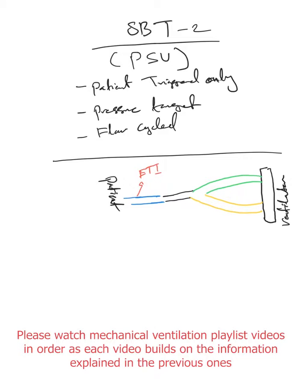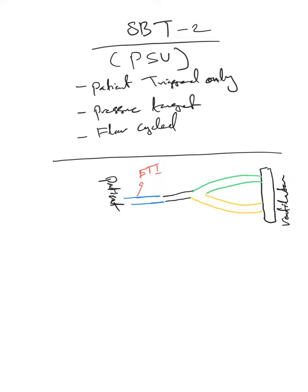Okay, so we finished talking about T-piece and again T-piece we said basically we disconnect the ventilator here and we just provide and leave the ET tube secured in place and provide a T-piece, oxygen through the T-piece.